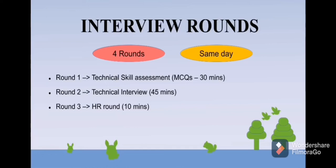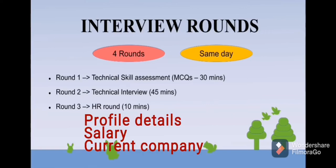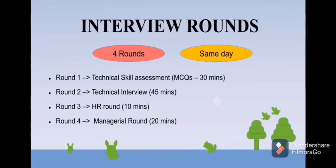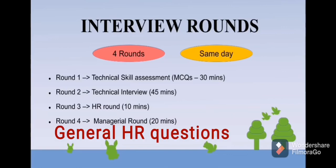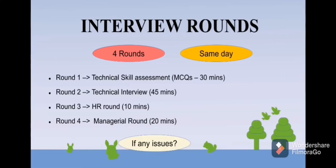Round 3 is the HR round. It will be very simple — they will just ask about your current company, your current CTC, and how much salary you are expecting. Then you will be called for Round 4, the Managerial Round, which lasts about 20 minutes. Here you can expect general HR questions and questions about Accenture, so prepare accordingly. If you face any issues during or before the interview, contact your point of contact from the HR or recruitment team.